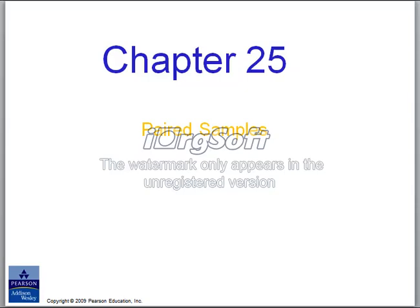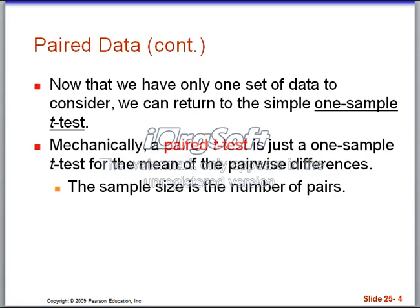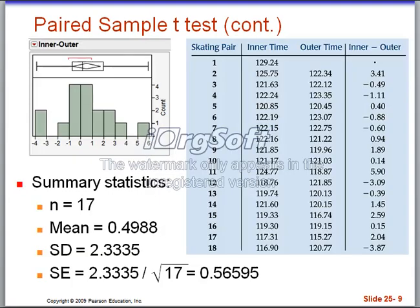I'm going to scroll down here a good bit. And when we get to the data right here, all we're looking at is a difference column. So right here, we have the difference between the inner and the outer time for a skater.